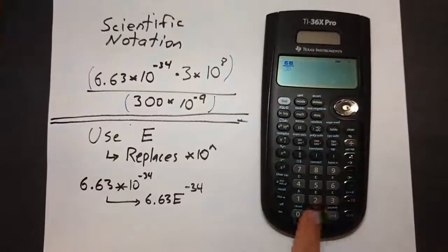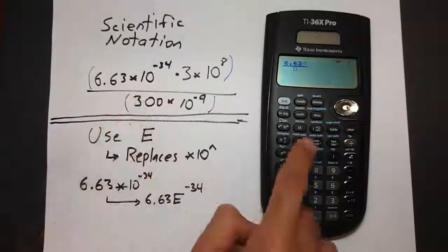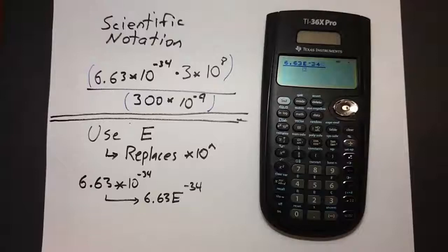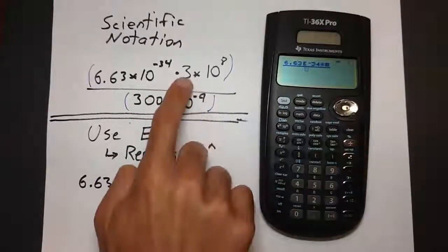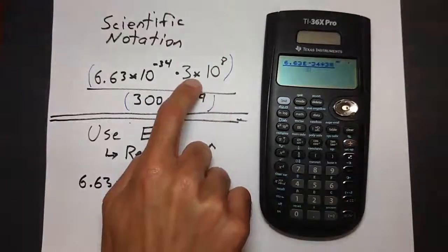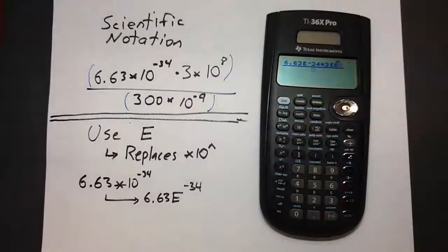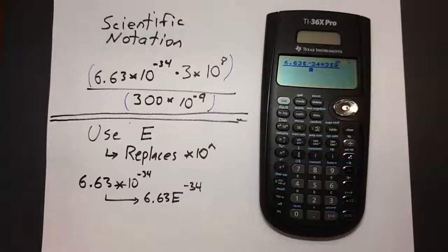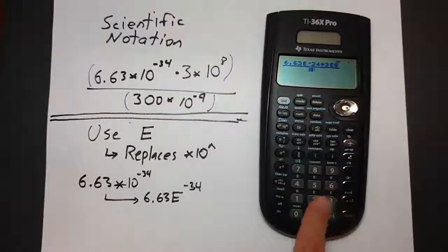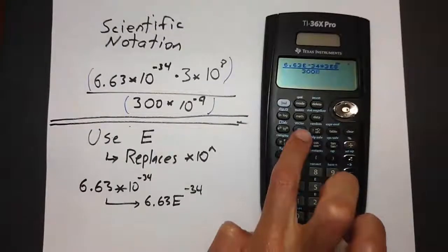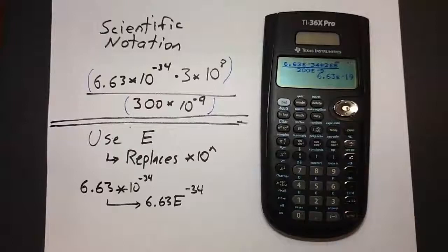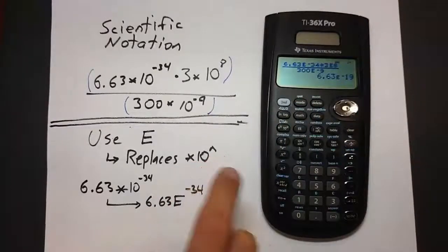Enter 6.63, then instead of saying times, press uppercase E, and say negative 34. Continue to the next number: press times, then for 3 times 10 to the 8th, instead of times press uppercase E and 8. Press down on the oval to move to the denominator. In the denominator, enter 300, then instead of times, use uppercase E, and say negative 9. Press enter. We get 6.63 E negative 19. The E still stands for times 10 raised to whatever comes next.